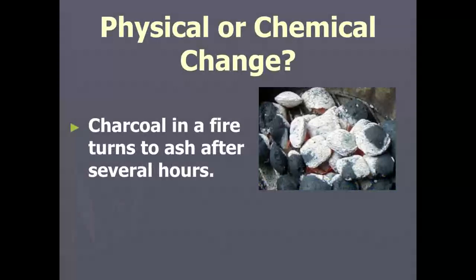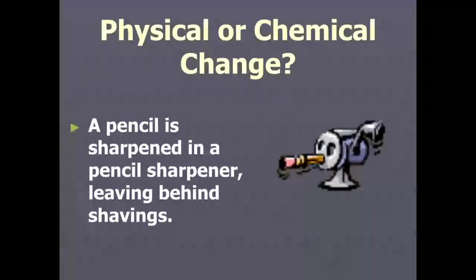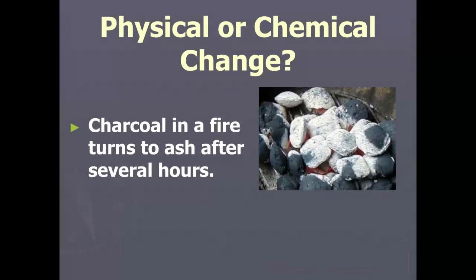Physical or chemical: charcoal in a fire turns to ash after several hours. Is it still charcoal or something different? Can you take the ash and turn it back into charcoal? No — you can't turn it back because it is something different. That makes it a chemical change.